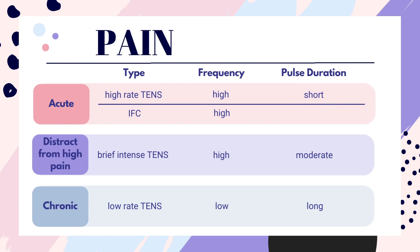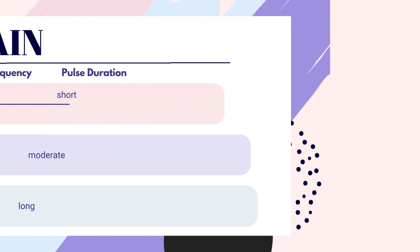For chronic pain, it's low rate TENS, which is also known as motor TENS. You're going to have a lower frequency but a longer pulse duration, so basically greater than 200 for the pulse duration. The amplitude will be high enough to see muscle activation, hence the other name, motor TENS.